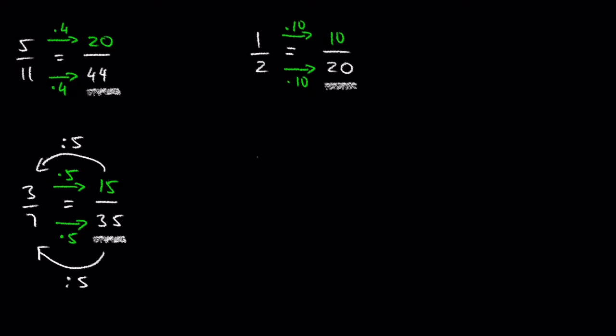What about this one? Change 3 over 4 to a fraction with 20 in the denominator. 4 times what equals 20? 4 times 5 equals 20, and 3 times 5 equals 15.